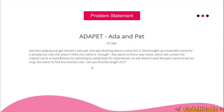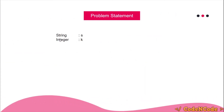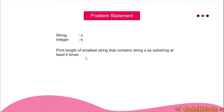You can go through the problem statement — pause the video and read it. The problem basically means: you are given T test cases; in each test case you are given two inputs — K, which is an integer, and S, which is a string. We want a string with minimum length such that it contains S as a substring at least K times. You have to print only the length of that smallest string.